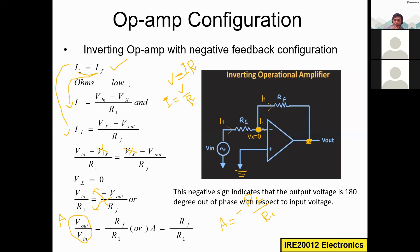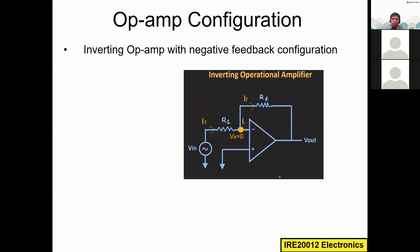The negative sign indicates that the output voltage is 180 degrees out of phase with respect to the input voltage. Because we are applying input to the negative terminal, the output is also negative. So if you apply a sinusoidal input, at the output you will get a phase-inverted sinusoid — that is what the minus sign is indicating.